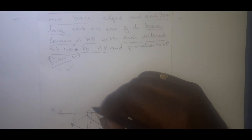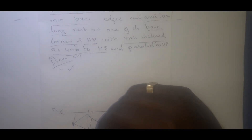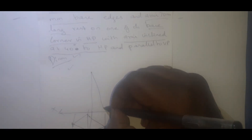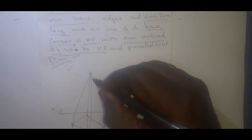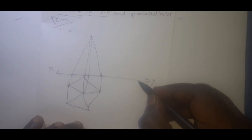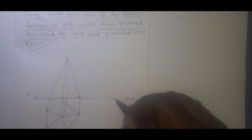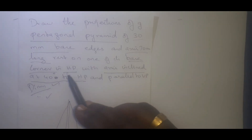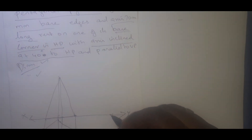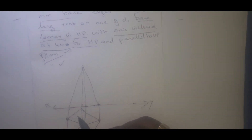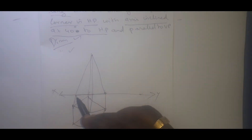The axis height is 70mm. So this is the axis line — axis height is 70mm. I will draw all the lines for this solid. Here where the corner is — this is the corner. This corner has to be kept at the bottom, at the base itself, because it is resting with the corner, so it has to touch the base. We will be measuring this length.